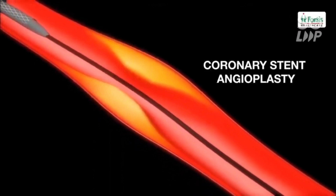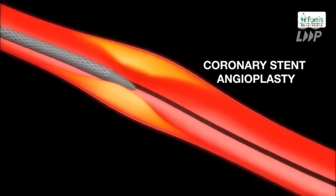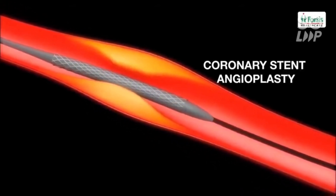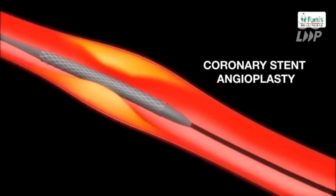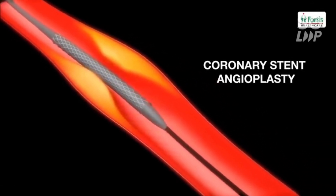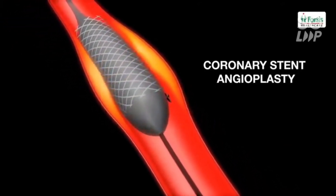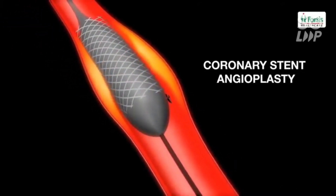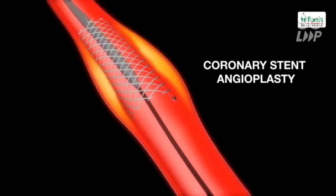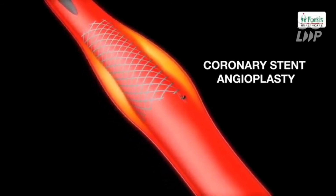A coronary stent is a small tube made of wire mesh designed to keep the artery open once it has been treated. A collapsed stent is placed over the deflated balloon catheter as it is inserted into position. When the balloon is inflated, the stent expands and locks itself into place. The deflated balloon and catheter are then withdrawn, leaving the stent behind to hold the artery open permanently.